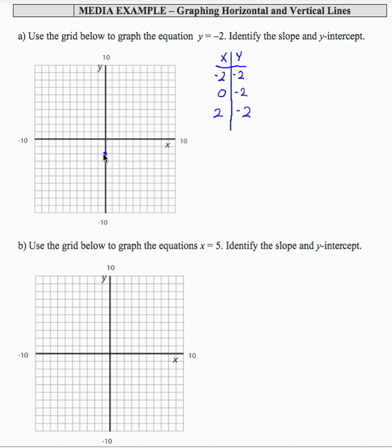So if I plot each one of those ordered pairs and draw the graph here, I'm going to get a horizontal line.